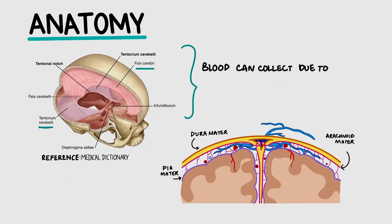The dura mater itself is split into different sections within the head. For example, this includes the falx cerebri, which separates the cerebral hemispheres, and the tentorium cerebelli, which separates the cerebrum from the cerebellum and the brain stem.